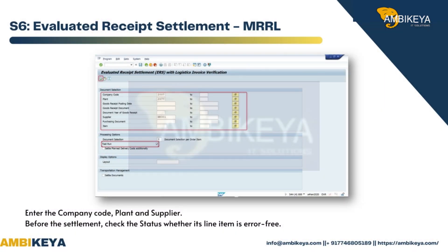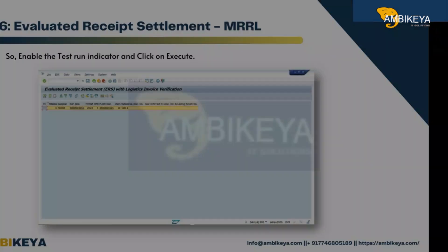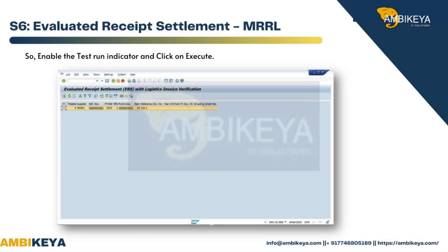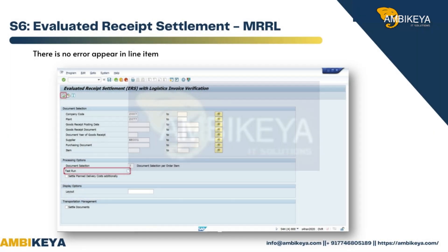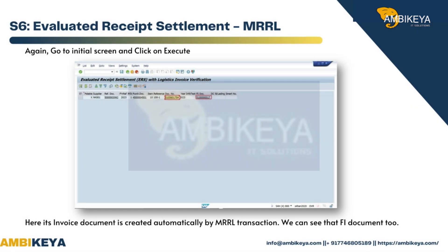S6 — Evaluated Receipt Settlement, transaction MRRL. Enter the company code, plant, and supplier. Before the settlement, check the status by enabling the Test Run indicator and clicking Execute to confirm that no errors appear in the line items. Then go back to the Initial Screen and click Execute — the invoice document is created automatically by the MRRL transaction. The FI document can also be viewed.